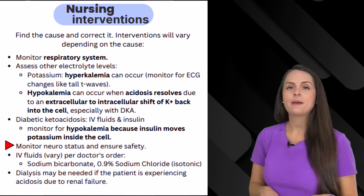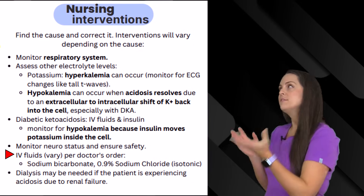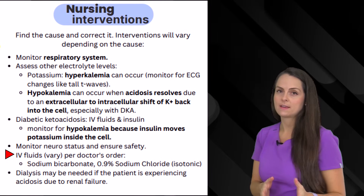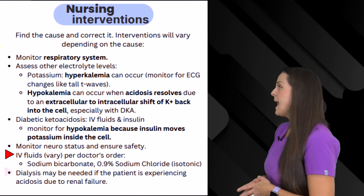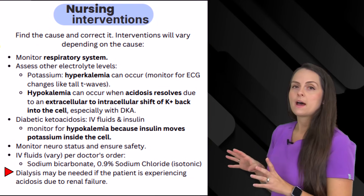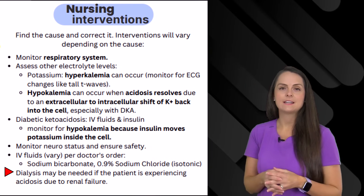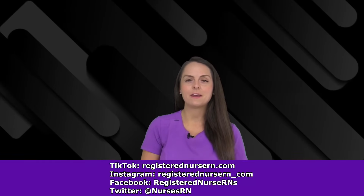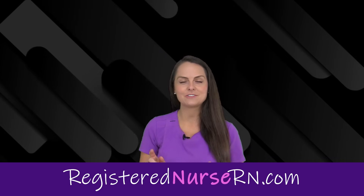Monitor the patient's neuro status and ensure their safety. IV fluids that may be given — depending on the cause — include sodium bicarb or normal saline. If metabolic acidosis is caused by renal failure, the patient can go for dialysis, which acts as the kidneys to filter the blood and help increase blood pH back to normal. That wraps up this review on metabolic acidosis. If you'd like to watch more videos in this series, you can access the link in the description below.